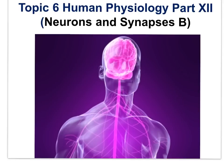IB Biology, Human Physiology, Part 12 is the second of three parts covering neurons and synapses. In Human Physiology Part 12, Neurons and Synapses B, the focus will be on the nature of the impulse and the details of the depolarization of the neuron membrane.